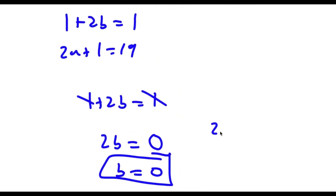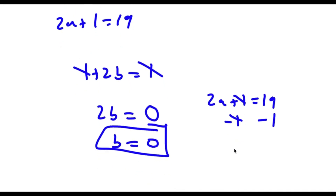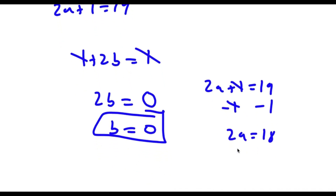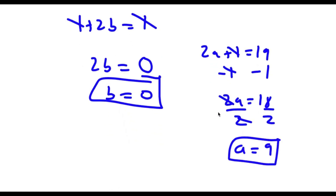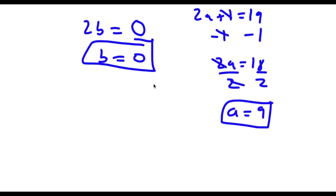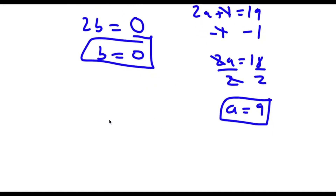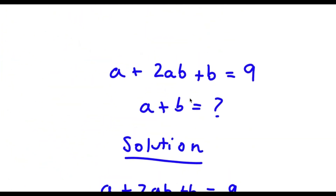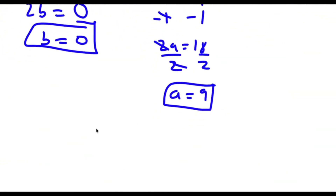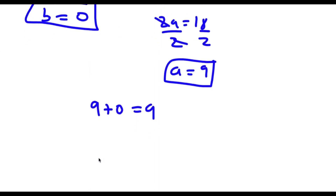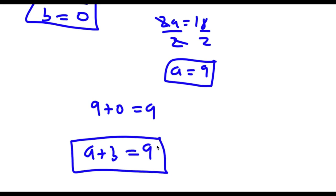Now for 2a plus 1 equals 19, I can simply subtract 1 on both sides. These two cancel out, so I'm left with 2a equals 18. Now if I divide both sides by 2, I'm left with a is equal to 9. So the value of b is 0 and the value of a is 9. We need to find the value of a plus b. Well, if b is 0 and a is 9, then 9 plus 0 is simply equal to 9, meaning a plus b is equal to 9.